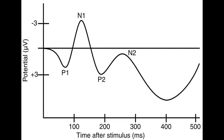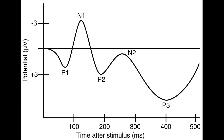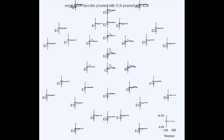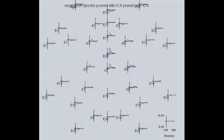The N200 wave, found over anterior scalp sites, is evoked in recognition of stimulus conflict. The P300 wave represents classification of task-relevant information and is sensitive to novelty effects. If we are successful, these methods will yield more accurate and insightful models of how people interact with networks under time-stressed conditions.